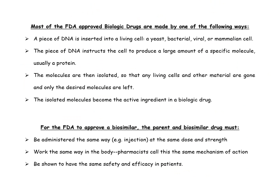Most FDA-approved biologics are made using the following methods. A piece of DNA is inserted into a living cell such as yeast, bacterial, or mammalian cell. That piece of DNA instructs the cell to produce large amounts of a specific molecule, usually a protein. The molecules are then isolated so that all living cells and other material are removed and only the desired molecules remain. Finally, the isolated molecule becomes the active ingredient in the biologic drug. This is the standard operating procedure for preparing any biologic drug.